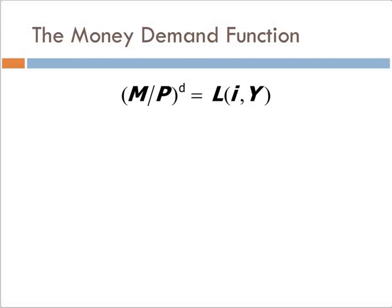So from that Keynesian liquidity preference framework, we get this basic demand for liquidity or demand for money that we're going to call demand for real balances, where it's a function of interest rates and income, where this demand for real balances is negatively related to interest rates and positively related to income.